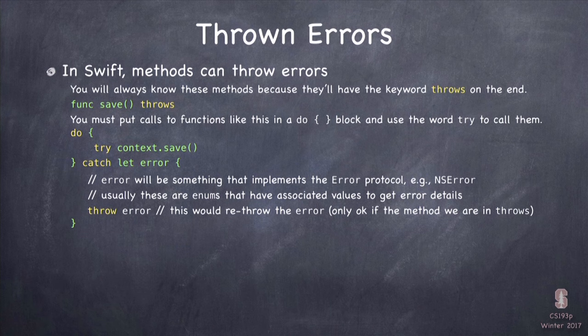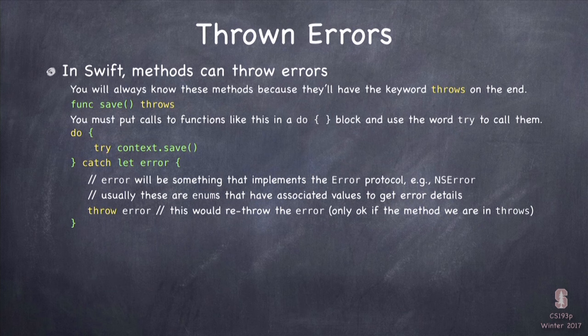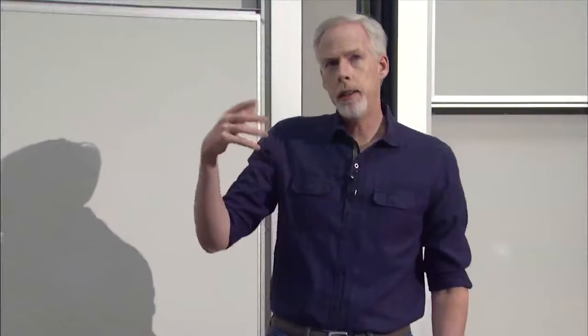If we want to catch the error that comes back, we have to do that 'try' inside a 'do' construct. We say 'do' open curly brace, then some code that has some tries in it, then close curly brace 'catch'. Then 'let error' allows us to grab the thrown error into a variable — we can call it any variable name we want. In that curly brace we handle the error, and then after we've handled it, our code continues.